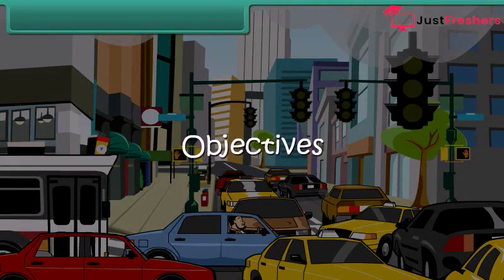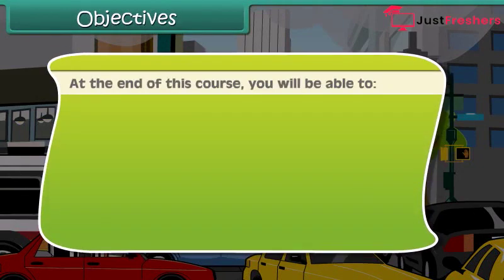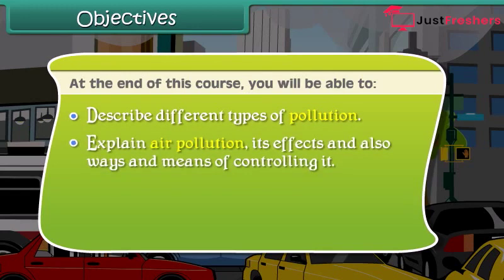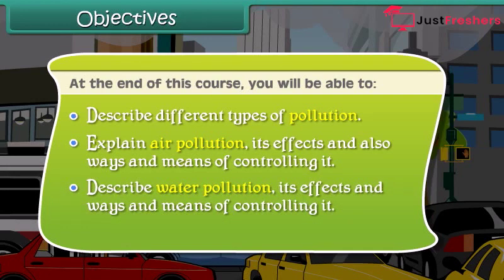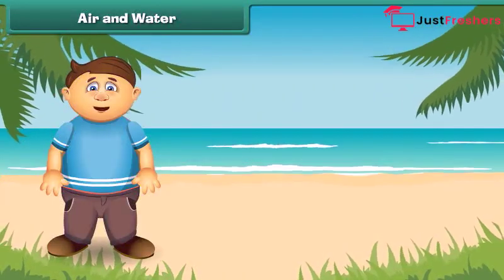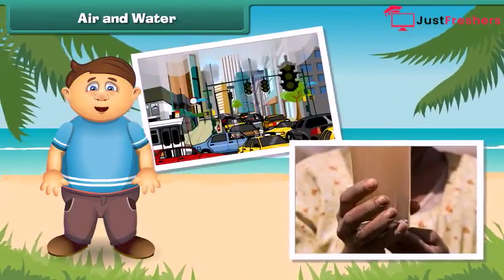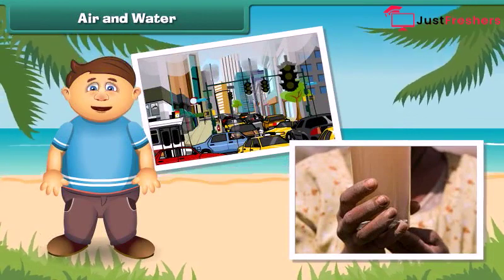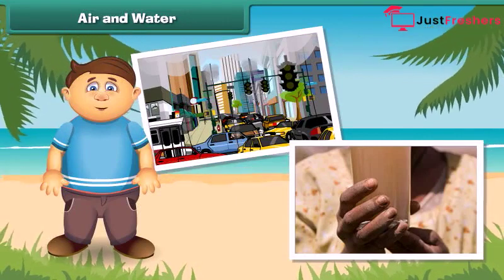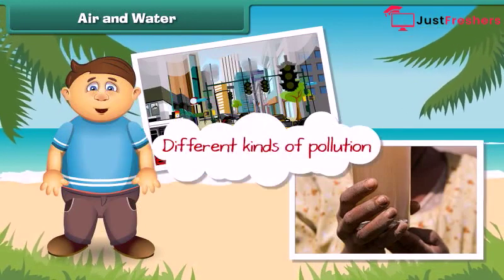At the end of this course you will be able to describe different types of pollution, explain air pollution, its effects, and ways and means of controlling it, describe water pollution, its effects and ways of controlling it, and explain noise pollution and soil pollution. As we all know, air and water mainly support life on earth, but now these two are getting dirty day by day, resulting in no fresh air to breathe and clean water to drink.